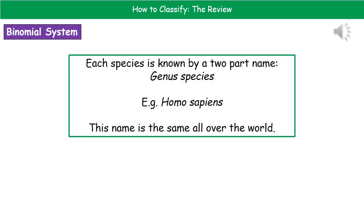The reason behind this system is to make sure that we have the same name being used all over the world. Obviously people speak different languages in different countries, but by having this binomial system, organisms all have the exact same two-part name no matter whether you're speaking French, German, English, or Italian — the name stays the same.